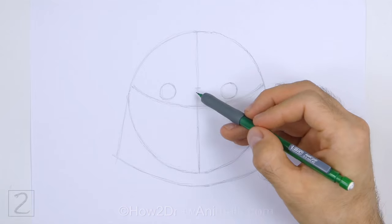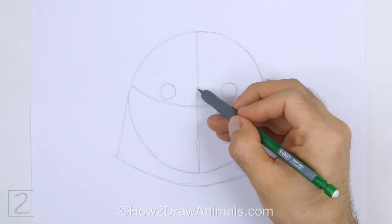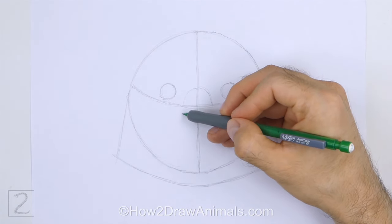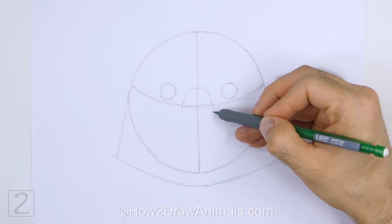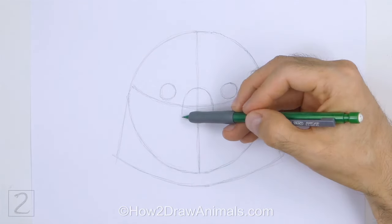Draw a curved line between the eyes as a guide for the top part of the beak. This guide should be similar to a small arc. Extend the bottom of the arc so that it's below the horizontal construction guide.